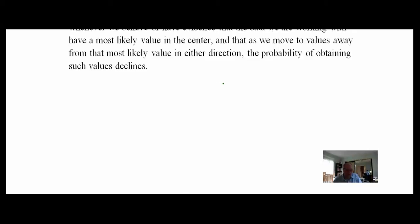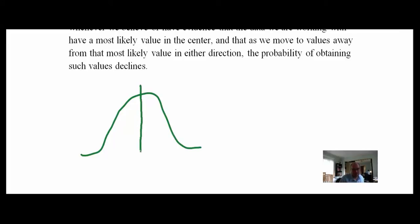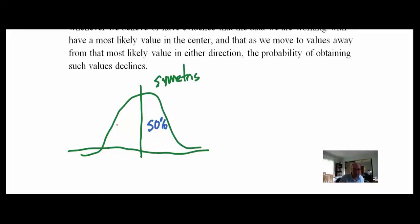Let's draw a picture of the normal distribution to help us remember. It's a bell-shaped curve — symmetric, which means half of the observations are on one side and half on the other. So we could say 50% of all observations are on one side and 50% on the other.